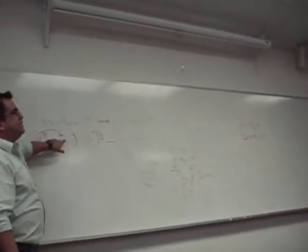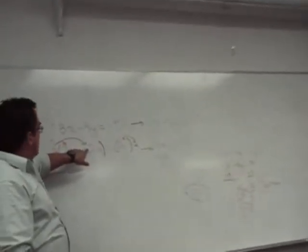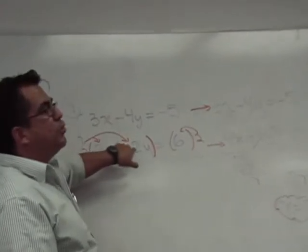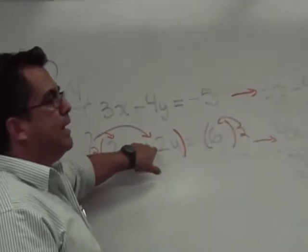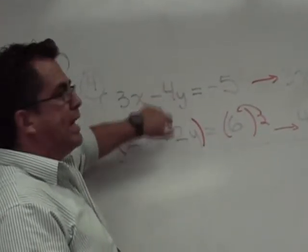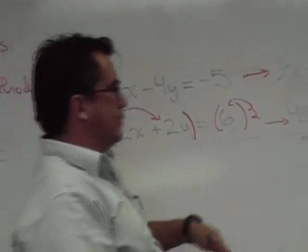Is there an easy fix? In other words, can I multiply one of the equations by something that will enable me to cancel one of the variables?